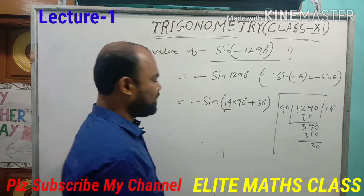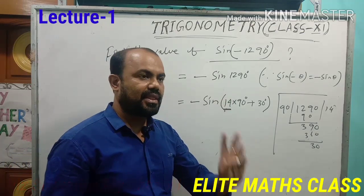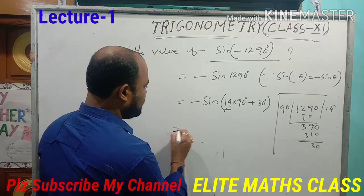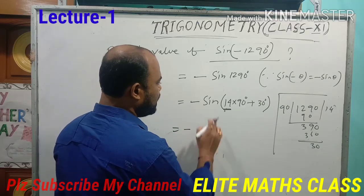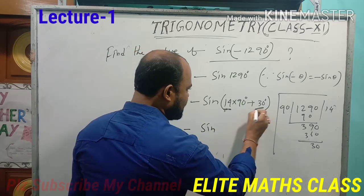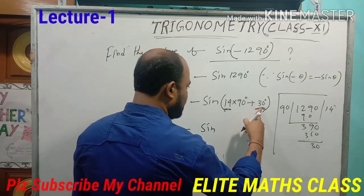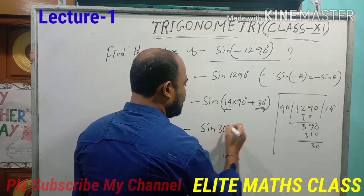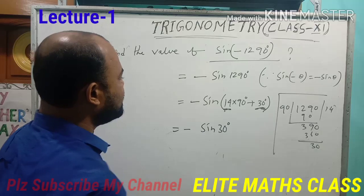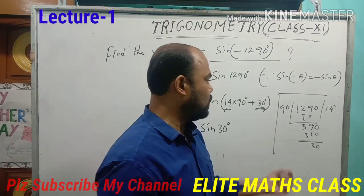What is N here? N is 14. N is even. Remember the formula: when N is even, there is no change of trigonometrical ratios. So sine will stay sine — write sine. Then you have to write the angle, which is the remainder: 30 degrees. Whatever the angle is here, you just write that angle. Now the important thing is the second part — the sign will be taken according to the quadrant rule.